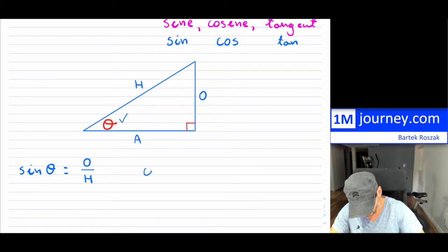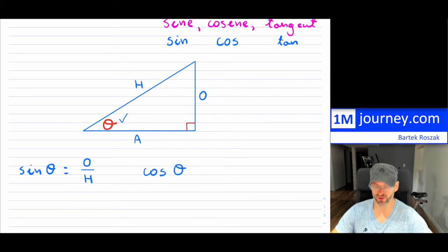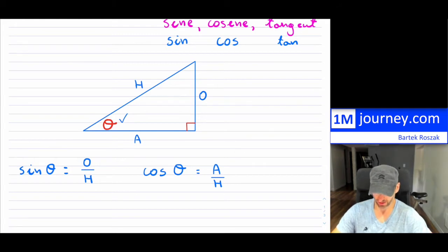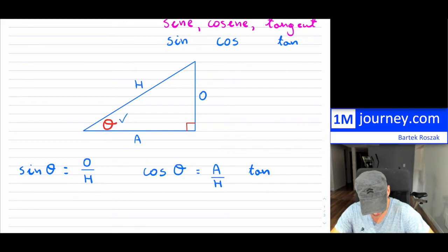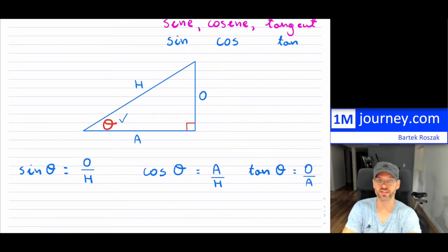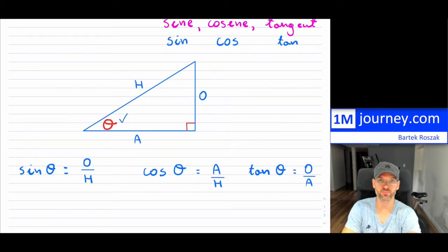For cosine, if you have cosine of the angle — whatever that angle might be — that is actually defined as the adjacent, so the length of the adjacent side, divided by your hypotenuse. And that is your cosine of the angle. Then finally, your tangent of that angle is defined as the opposite side divided by the adjacent side. Those are the actual definitions of sine, cosine, and tangent.